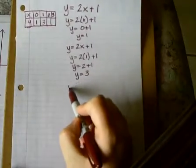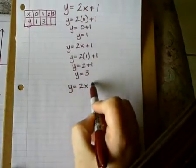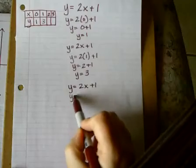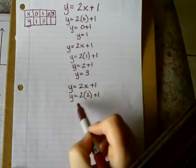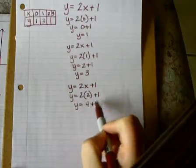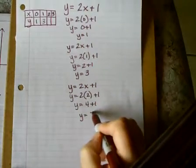For the next one, again, repeat the same process. So y equals 2. Instead of x, I'll use 2, plus 1. 2 times 2 is 4, plus 1. Y equals 5.